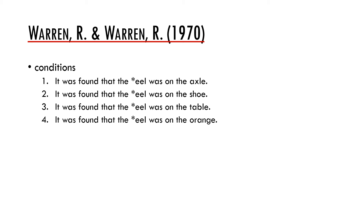These sentences differed only in the word at the end. There were four sentences: 'It was found that the eel was on the ale.' 'It was found that the eel was on the shoe.' 'It was found that the eel was on the table.' 'It was found that the eel was on the orange.' In the first sentence participants claimed they heard the word 'wheel', in the second 'heel', in the third 'meal', and in the fourth 'peel'.